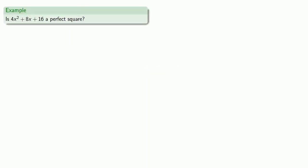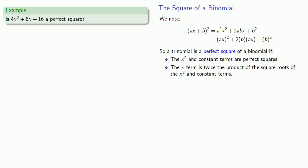So for example, we might try to figure out whether 4x squared plus 8x plus 16 is a perfect square. So first we'll check to see if the x squared and constant terms are perfect squares. So our x squared term, 4x squared, is 2x quantity squared, so it's a perfect square. Our constant term is 16, which is 4 squared, so it's also a perfect square.